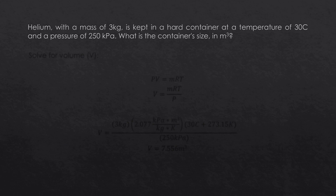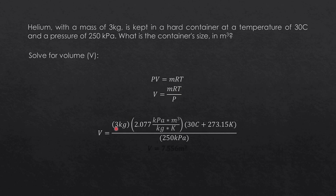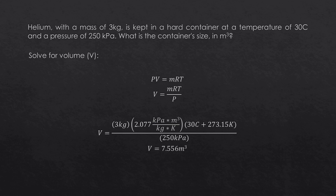Since we found the gas constant, we can now solve for the volume. From PV equals MRT, we derive V equals mass times R times T divided by pressure. Plugging in the values: 3 kg times 2.077 kPa·m³/kg·K times (30 + 273.15) K, divided by 250 kPa. Note that when dealing with ideal gas, we must convert Celsius to Kelvin by adding 273.15. Calculating this, we get a volume of 7.556 cubic meters.